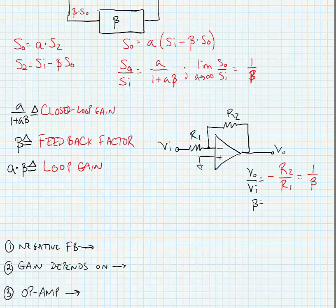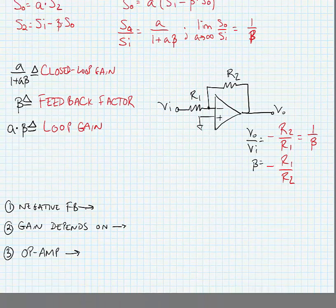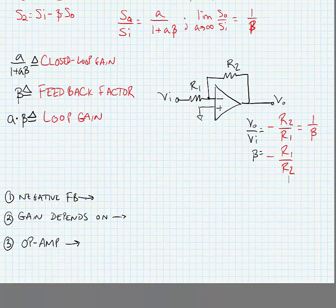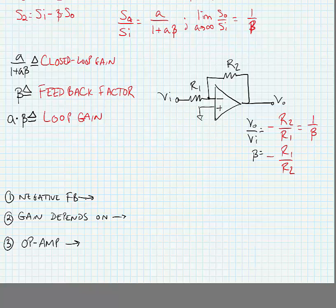So we know our first beta is minus R_1 over R_2. Now this is going to be important because this is a ratio of resistances, and we'll examine a few of the characteristics that this negative feedback provides us right now.